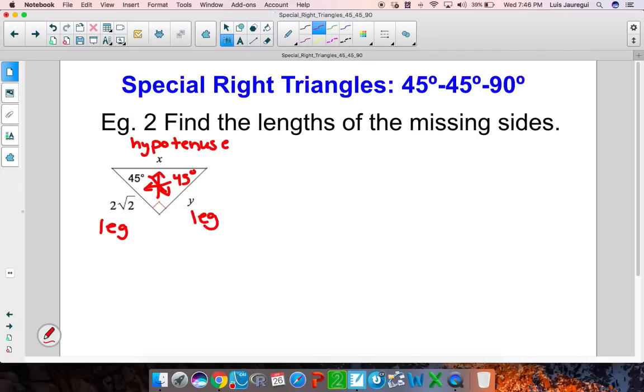Keep in mind your relationships that we mentioned in the previous example. So we know that legs are congruent, so leg is equal to leg. One of the legs here is 2 times the square root of 2, and the other one is y. So we can already see that y will have a value of 2 times the square root of 2.